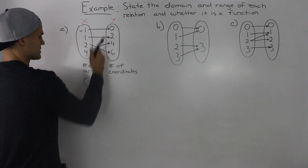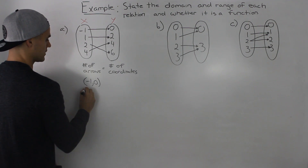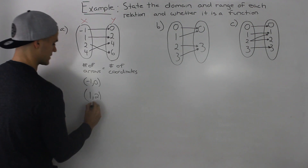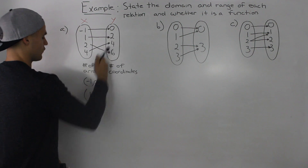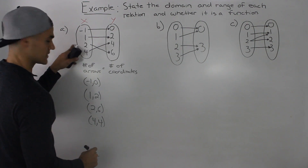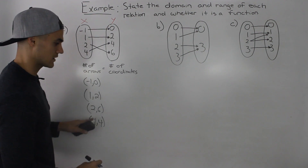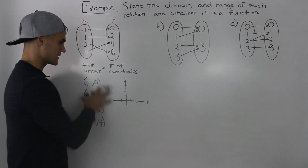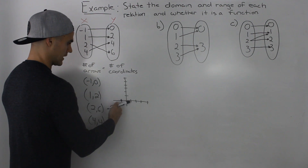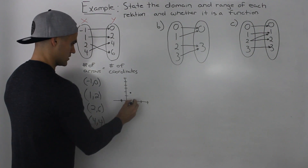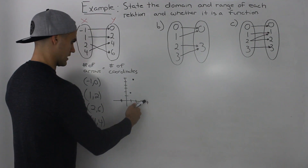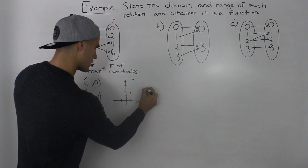Starting with the first one: negative one and zero is one coordinate, one and two is another coordinate, two and six, and then four and four. We've turned the mapping diagram into a list of coordinates, and now it just becomes like the questions we were doing in the previous video. We could take these points and plot them on a graph: negative one and zero would be here, one and two up here, two and six up here, and four and four right over here.